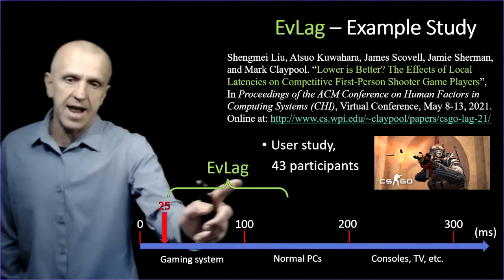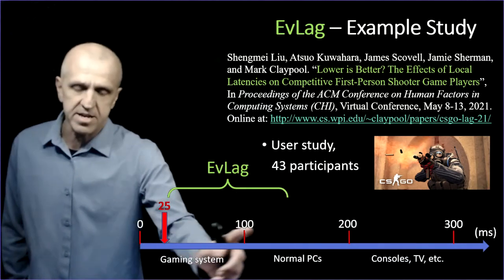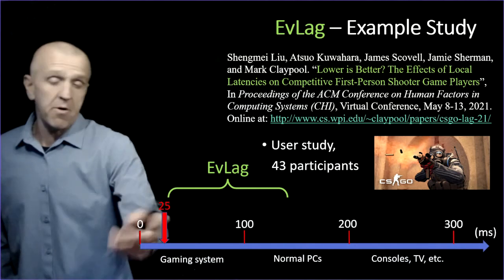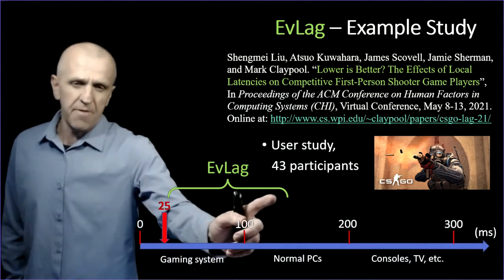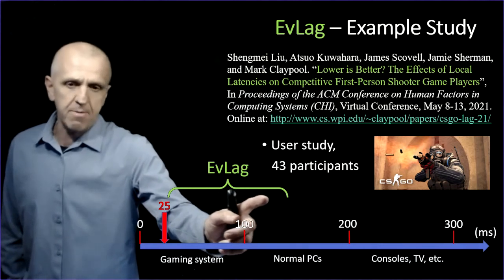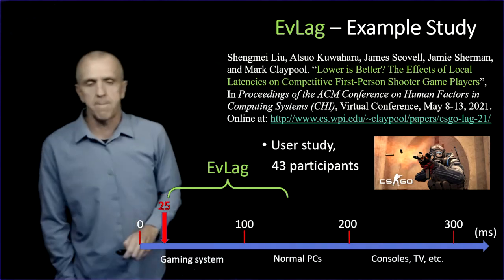In this case, we're using EvLag to control. From the base system, we can add lag. We can see over this range, what does that set of latencies do to player performance and quality of experience. If you're a competitive player here, how much would you gain from upgrading to get a lower latency system?